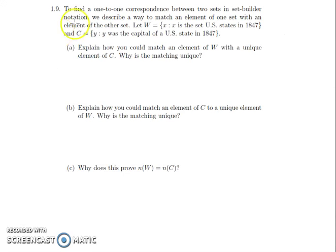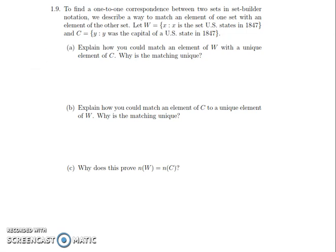So let's take a look at this problem — to find a one-to-one correspondence between two sets using set-builder notation. This is problem 1.9. Our first question is to explain how you could match an element of W with a unique element of C, and then indicate why the matching is unique. Note that this question has two parts — the same is true for part B: explain how, and then say why the matching is unique. Both questions have two distinct components.